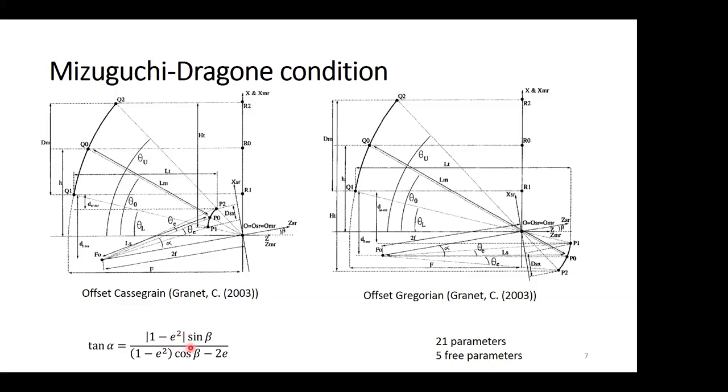Beta is the angle between the sub and the main reflector, and alpha is the angle between the feed axis and the sub-reflector.